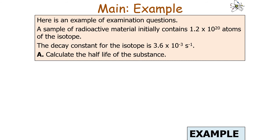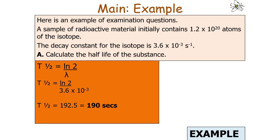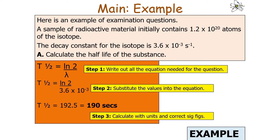Example question: using the same sample with decay constant 3.6 × 10⁻³ s⁻¹, calculate the half-life. Substituting into t-half equals ln(2) over lambda gives a half-life of 190 seconds. The units are seconds because the decay constant is in s⁻¹, and dividing by s⁻¹ gives seconds.